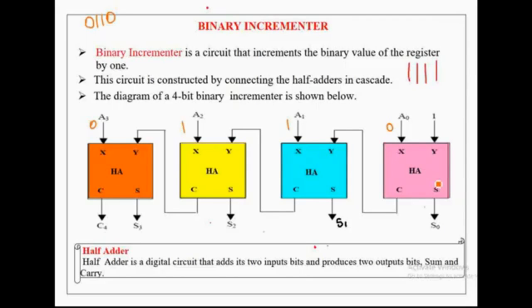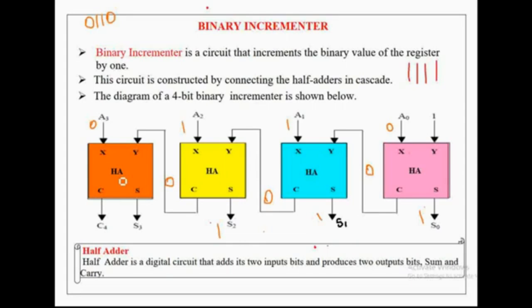Now let's check the process of the binary incrementer starting from the least significant half adder. This half adder takes two inputs 0 and 1, performs addition, and produces sum value 1 and carry value 0. This carry value is applied as one of the inputs to the next higher order half adder, which takes two inputs 1 and 0 and produces sum value 1 and carry value 0. The next half adder takes two inputs 1 and 0 and produces sum value 1 and carry value 0. The next half adder takes two inputs 0 and 0 and produces sum value 0 and carry value 0.